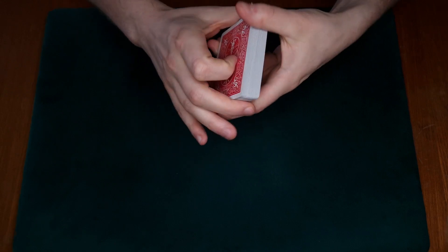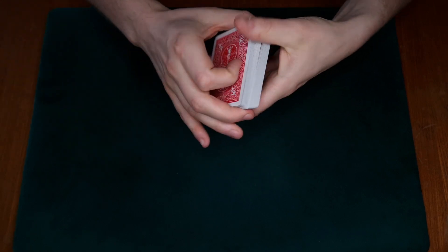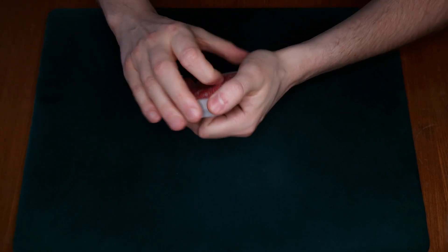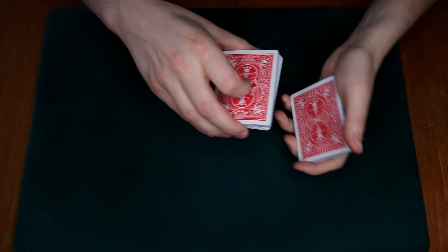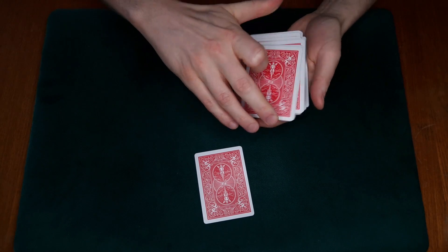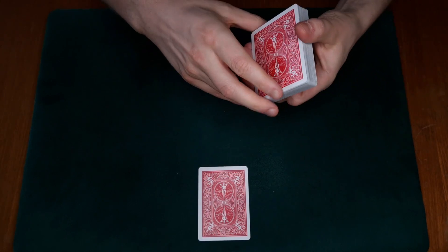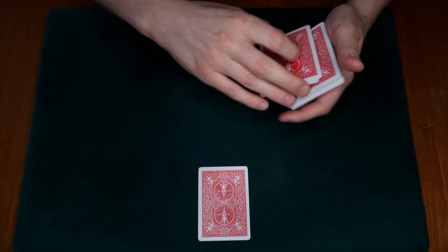For this trick I'm just going to have the spectator pick a card. I'm simply going to riffle down like this and I want them to say stop wherever they want. Let's say they stop me right here. Now I'm going to leave that card right here for now, but we're going to return to that in a moment.